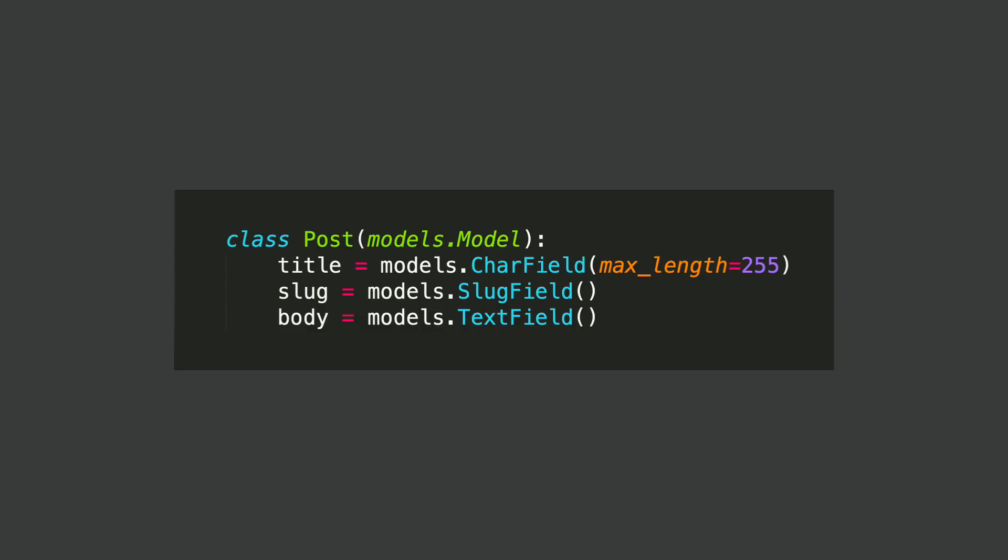Models. For example, if you take this model here, you have a class Post, which is the name of the model. Then you have three different fields: the title, which is a CharField used to store small text like a title or name. We also set the max length. Then you have the slug field, which is a URL representation of the title. And then the body, which is a TextField used for longer texts. There are also more fields like EmailField, ImageField, IntegerField and so on.